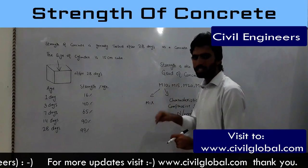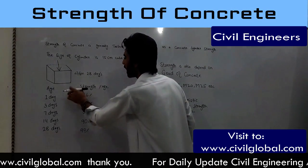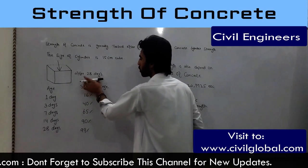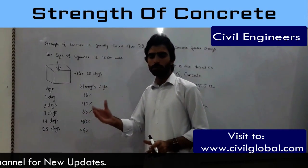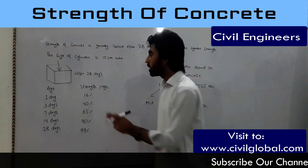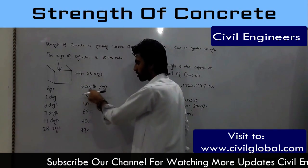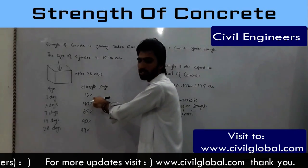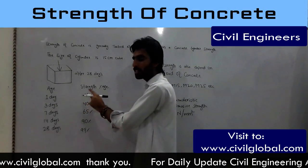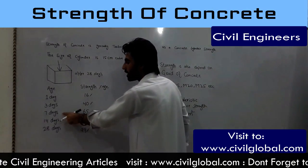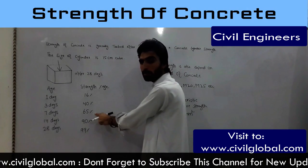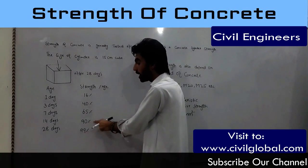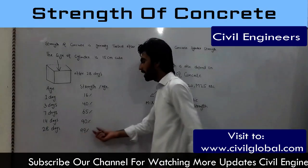You can watch that in detail via the link in the description. Coming back to the project: this is the 15 centimeter cubic cylinder or box. Looking at the age versus strength percentage — at one day, concrete gains 16% strength; at three days, 40%; at seven days, 65%; at 14 days, 90%; and at 28 days, it gains 99% of its strength.